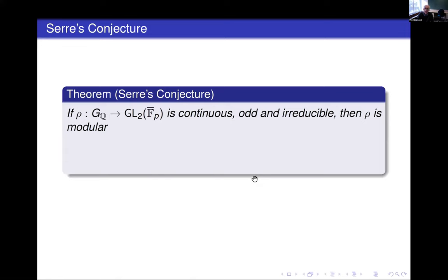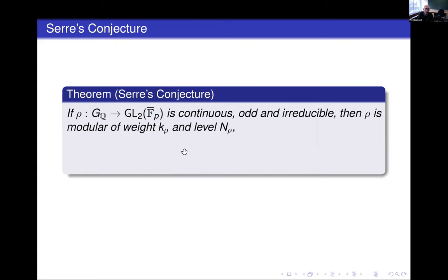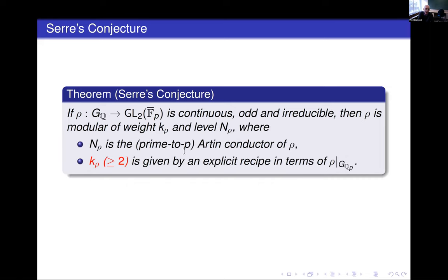First, the statement of Serre's conjecture. If ρ is a continuous odd irreducible mod p representation of G_Q—the absolute Galois group of Q—Serre's conjecture says that any such two-dimensional mod p representation is modular, in the sense that it comes from a modular form. More precisely, it comes from a modular form of some prescribed weight k_ρ and level N_ρ. This level N_ρ is the prime-to-p Artin conductor of ρ, so it depends on the ramification away from p.